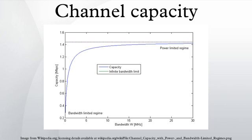The noisy channel coding theorem states that for any epsilon greater than zero and for any transmission rate R less than the channel capacity C, there is an encoding and decoding scheme transmitting data at rate R whose error probability is less than epsilon, for a sufficiently large block length. Also, for any rate greater than the channel capacity, the probability of error at the receiver goes to 1 as the block length goes to infinity.